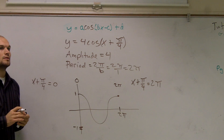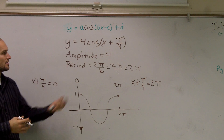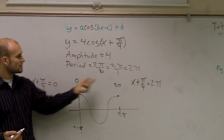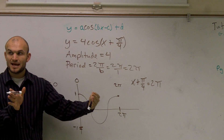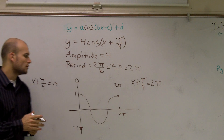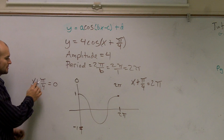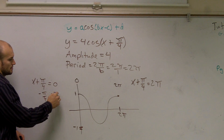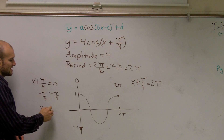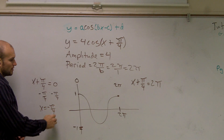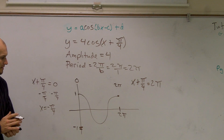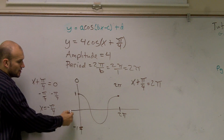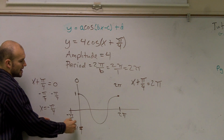You're just plugging in the pi over four. If you had just cosine of x, cosine of x crosses at zero and two pi — those are your first period endpoints. When I solve for x, I subtract pi over four, and I get x equals negative pi over four. So my graph now has its left endpoint at negative pi over four instead of zero.